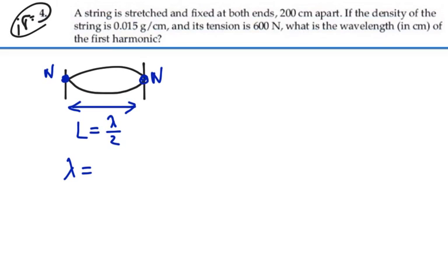So the wavelength corresponding to that is two times L. In this case it would be two times two meters or four meters. So the wavelength of the first harmonic is four meters or four hundred centimeters.